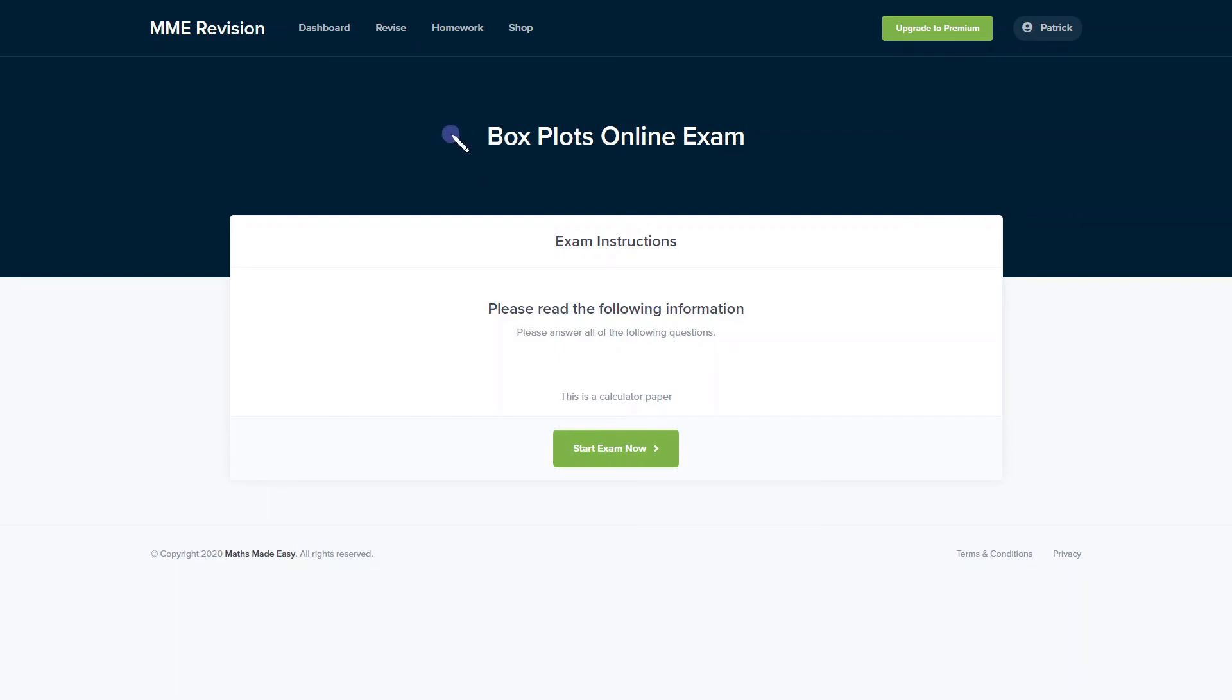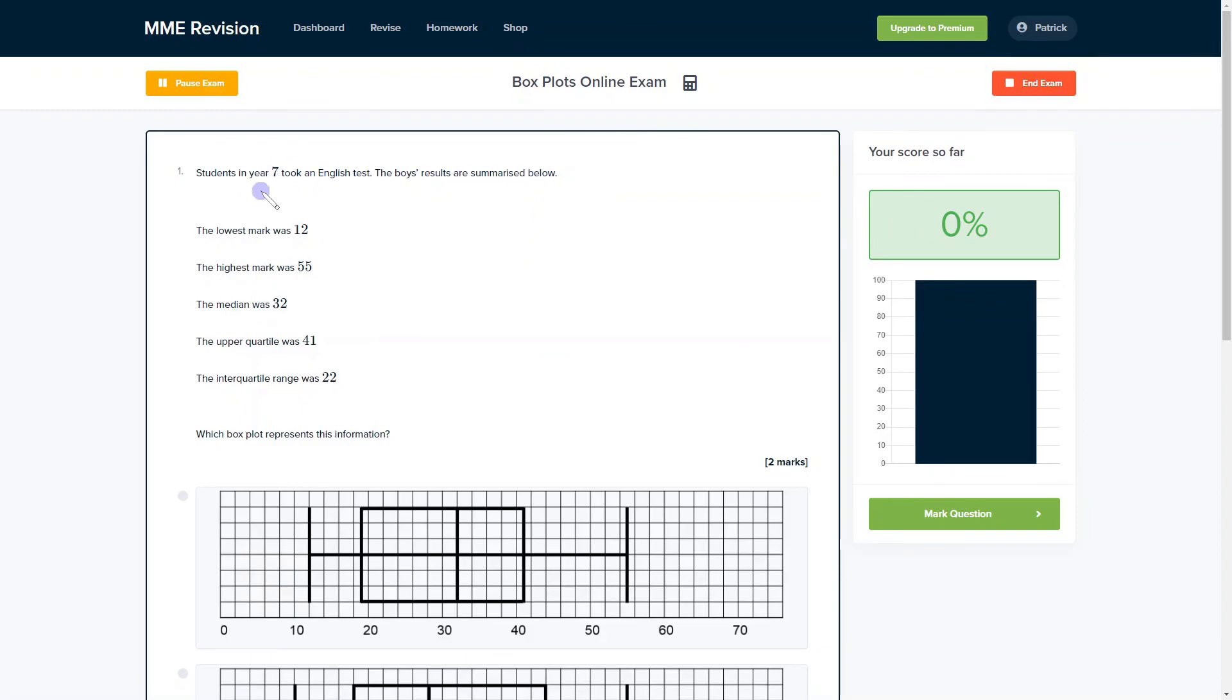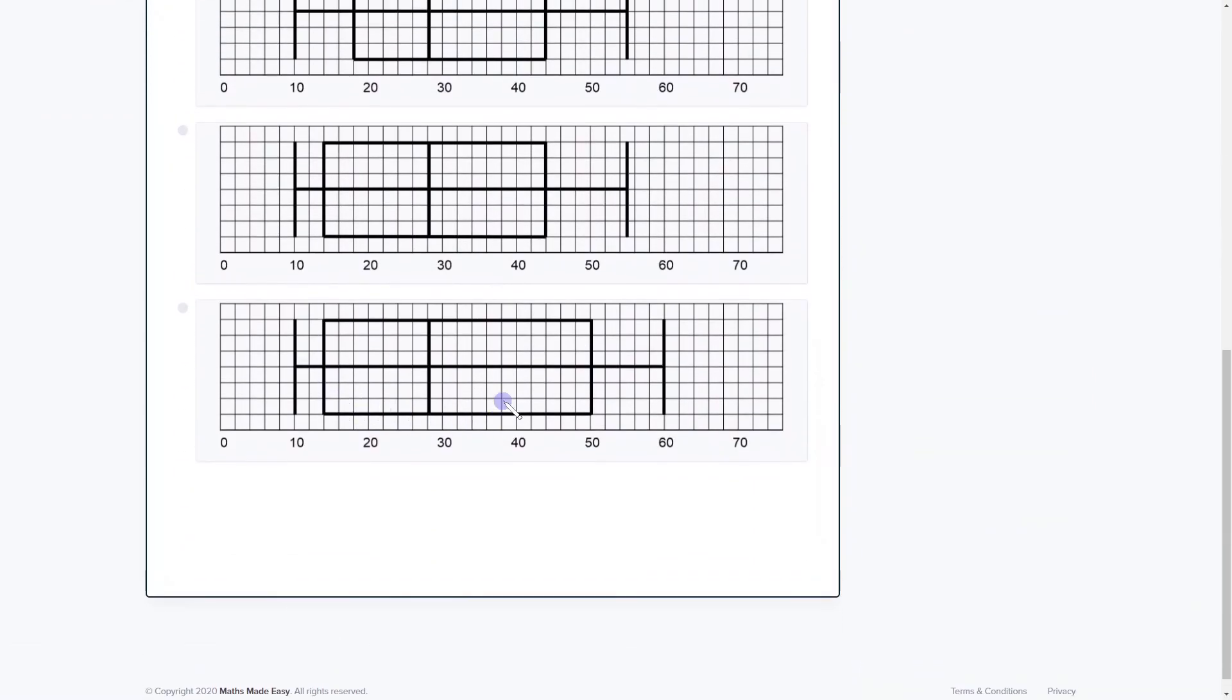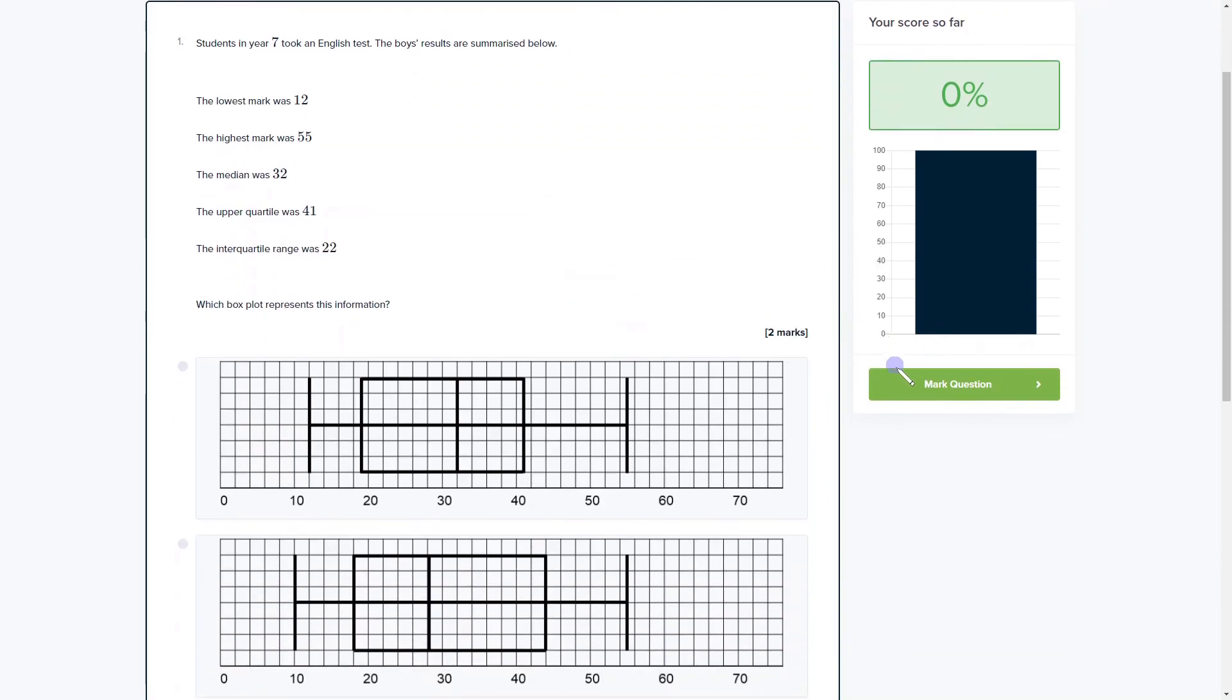So if you're feeling confident on this topic, you can have a go at our box plots online exam. You can test your skills there and it's available through our revision platform. Now if you take the test, you'll find loads of different questions to have a go at, all of which you'll receive instant feedback for. So this is a really good way of finding out where your strengths and weaknesses are and how you can quickly improve. So if you're interested, then click the link below to take the exam.